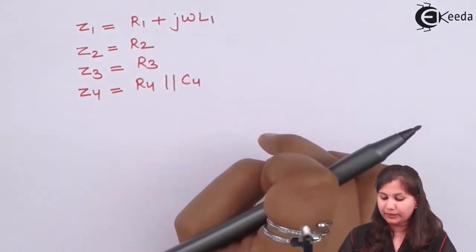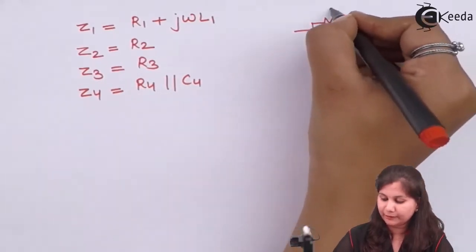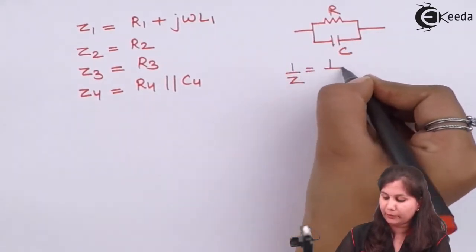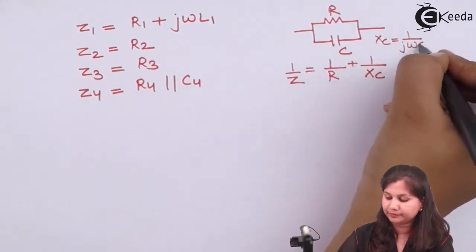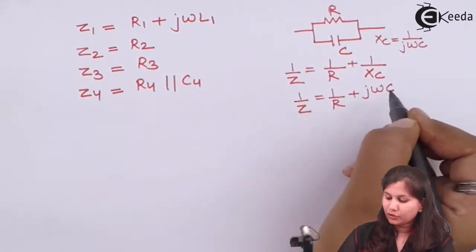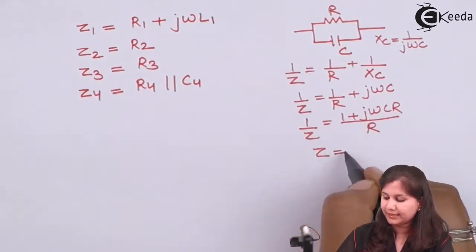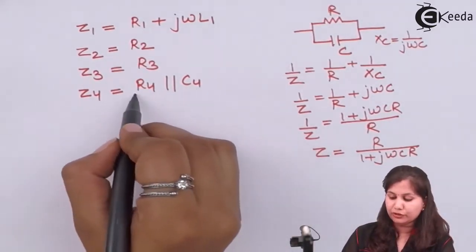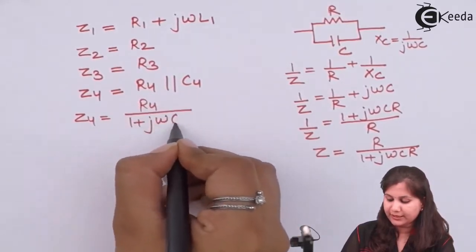For the parallel combination of a resistance and capacitor, 1/Z = 1/R + 1/Xc, where Xc = 1/(jωC). So 1/Z = 1/R + jωC, giving 1/Z = (1 + jωCR)/R, or Z = R/(1 + jωCR). Therefore, Z4 for the parallel combination of R4 and C4 is Z4 = R4/(1 + jωC4·R4).